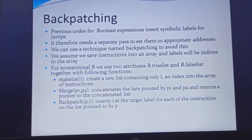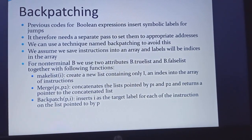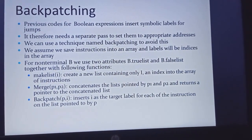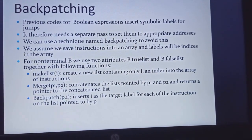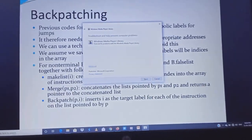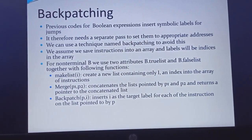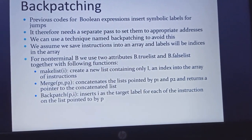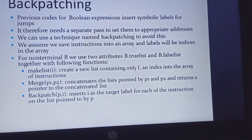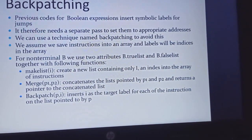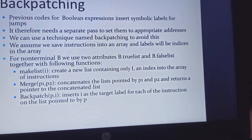Next is backpatching, the last topic in unit 3. In backpatching, we insert symbolic labels into the Boolean expressions. We separate the appropriate addresses of the elements or nodes. This technique avoids unnecessary work — reducing repetition of work. We save the instructions into an array and labels are also indicated from the arrays.